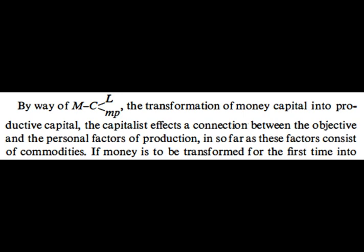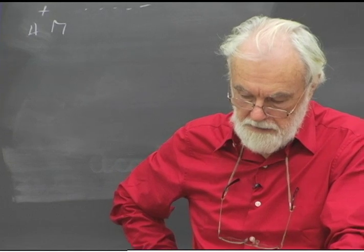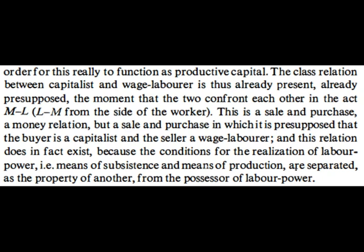The fact that you see some sort of contract going on doesn't say there's a labour market, therefore this is capitalism. The labour market may be a necessary condition for there being capitalism, but simply the labour market is not a sufficient condition. In page 114, Marx kind of says that by way of this first money-into-commodities — labour and means of production — the capitalist affects a connection between the objective and the personal factors of production, insofar as these factors consist of commodities.